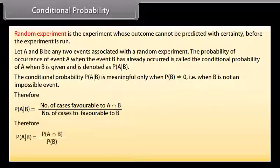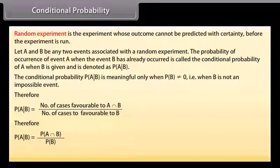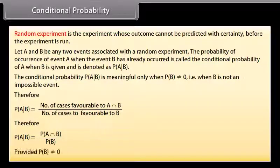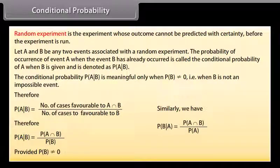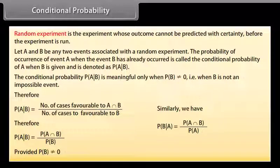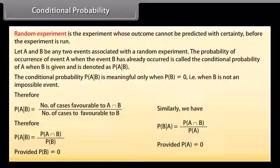Therefore, the conditional probability of event A given event B is equal to P(A∩B) divided by P(B), provided P(B) is not equal to zero.